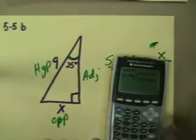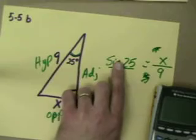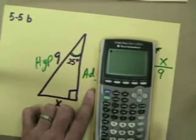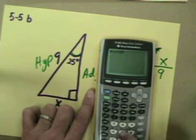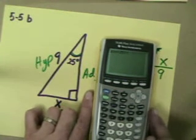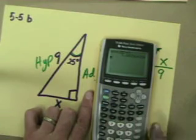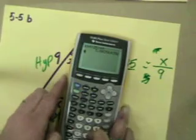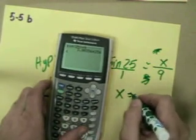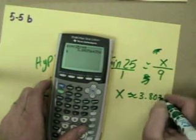Cross multiply, I get X. And I'm going to show you here how to multiply on this. The sine of 25 times 9. This way I don't have to write it in. But the sine of 25, make sure to close your parentheses, or you will almost always get it wrong, times 9. That gives me 3.8, or it's about 3.8036.